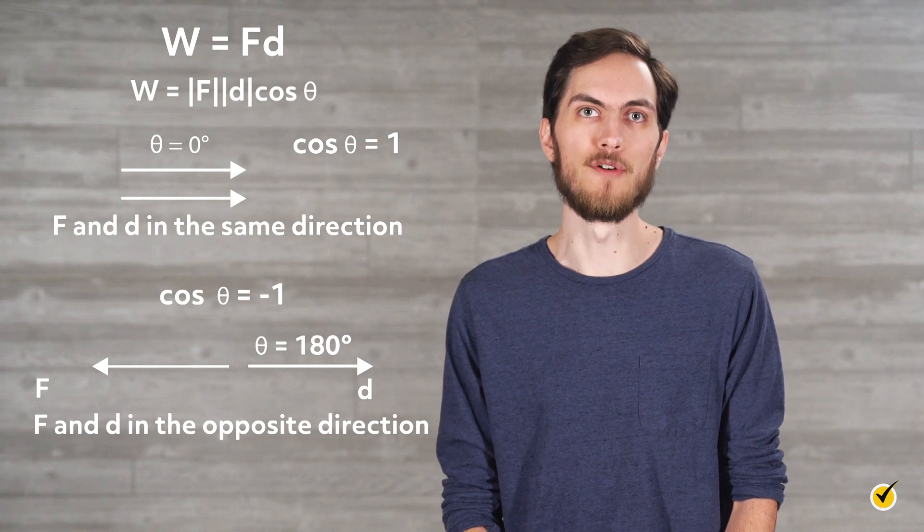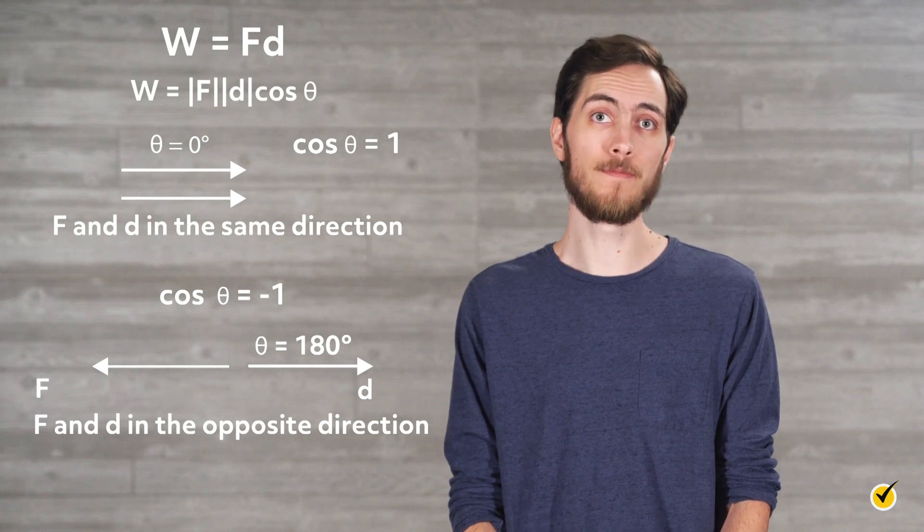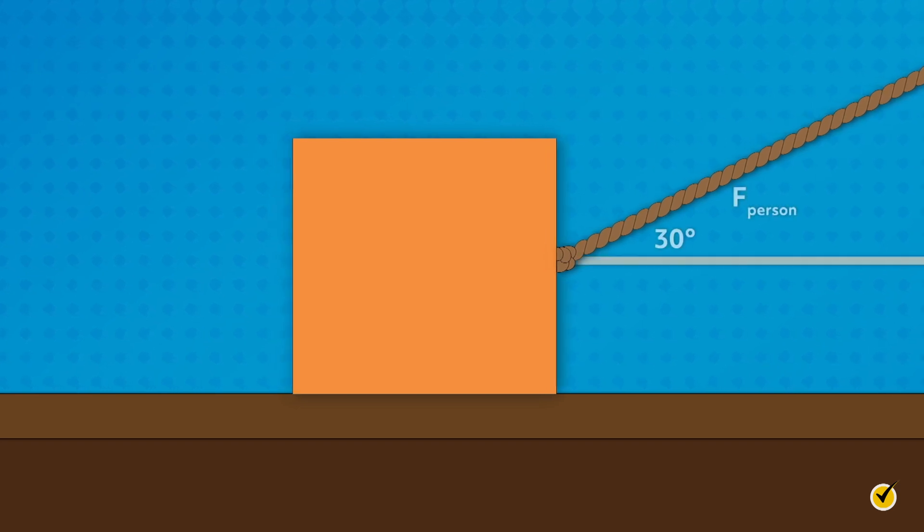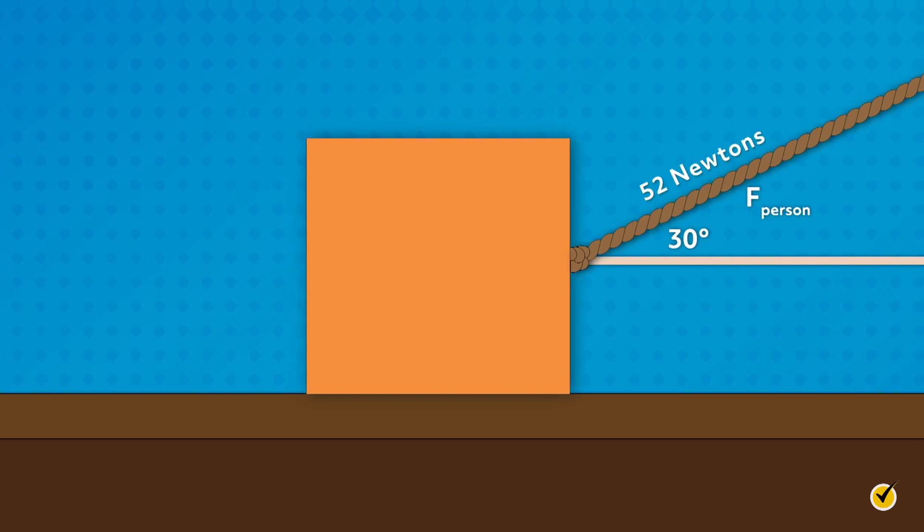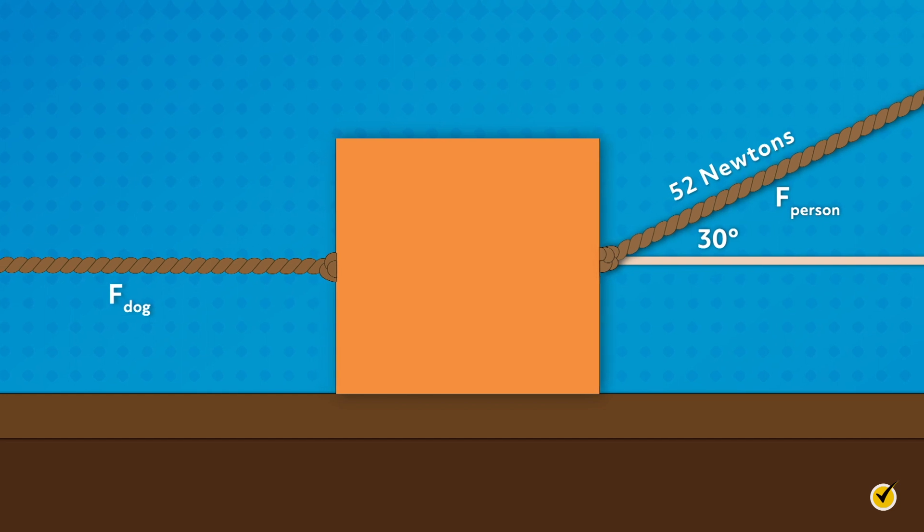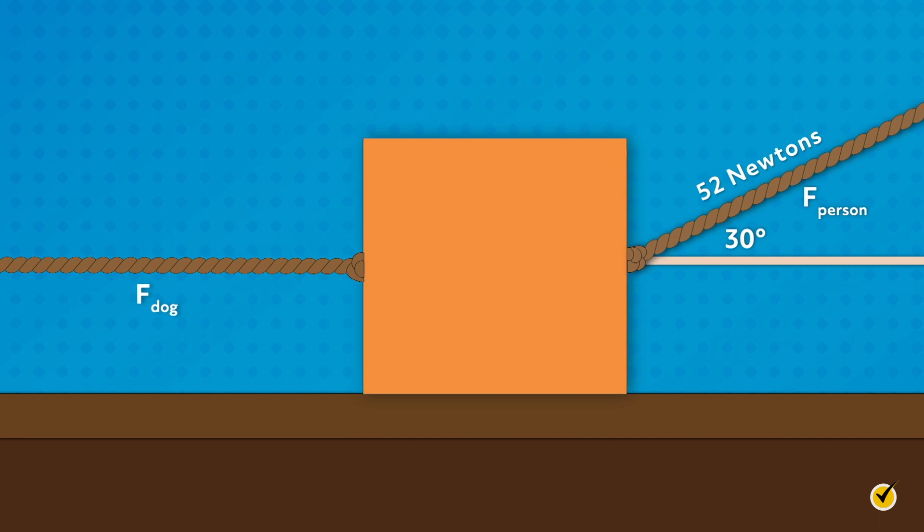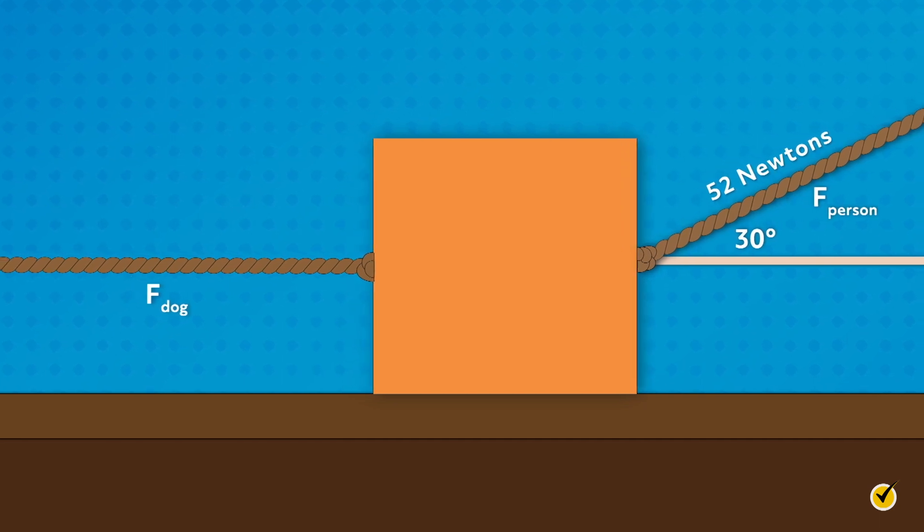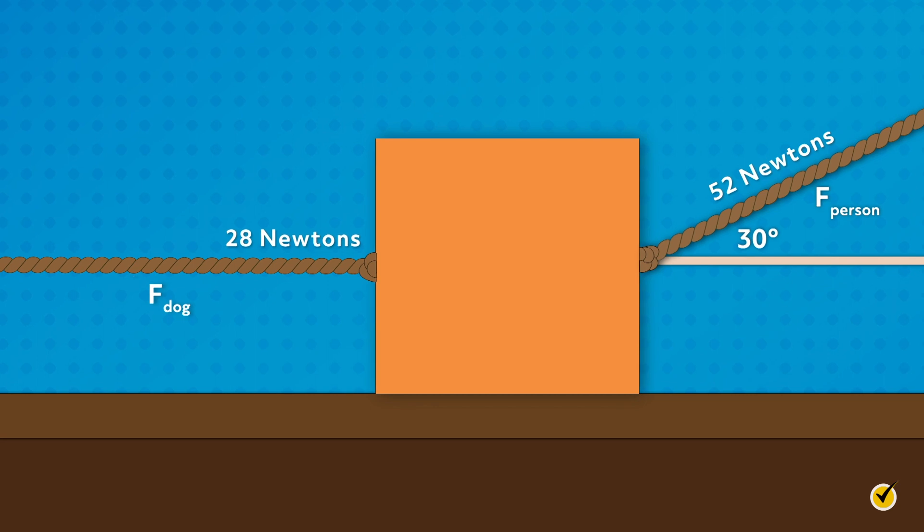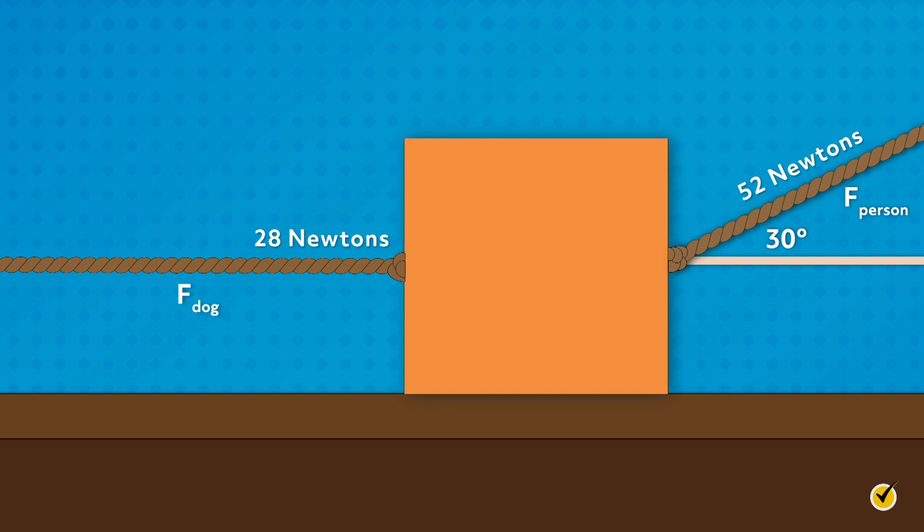Let's consider an example where the force and displacement are not at a zero degree or 180 degree angle. Imagine someone dragging a heavy box along a frictionless surface by a rope. The person pulls the rope at an angle of 30 degrees from the horizontal with a force of 52 newtons and the box is moving along with the person. However, there is another rope attached to the other side of the box and a playful dog comes along and pulls in the opposite direction. The dog is about the same height as the spot the rope is attached to and pulls directly opposite the direction of motion with a force of 28 newtons. The person pulls the box another 2 meters before they notice the dog and stop.